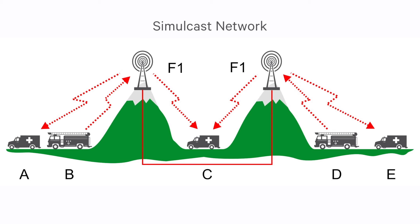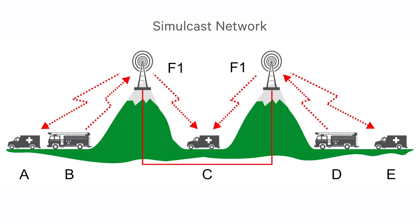A simulcast network is designed so that all the repeaters can synchronize their transmissions in time, making them appear as an extremely large single super repeater with a super large coverage area. This coordination of transmissions is quite challenging, but for users, operating a simulcast network is a dream. The radios, because they operate on a single frequency, can move from one location to another without the user touching the radio or modifying its settings or changing channels. The radios just work everywhere.